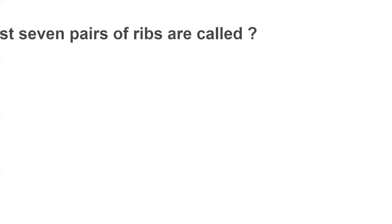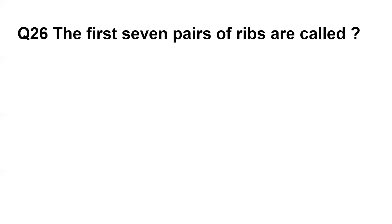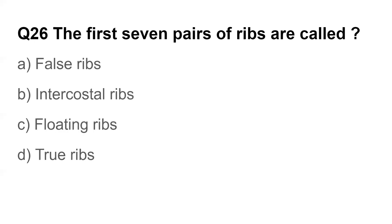Question number twenty-six: The first seven pairs of ribs are called — false ribs, intercostal, floating ribs, or true ribs. The answer is true ribs, because they are attached to both the spine and the sternum (breast bone).